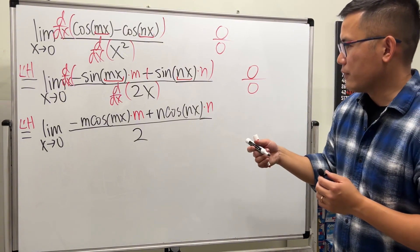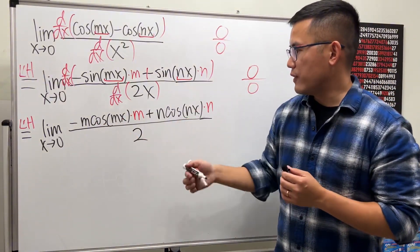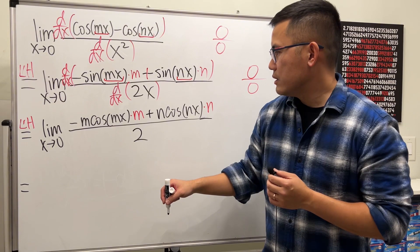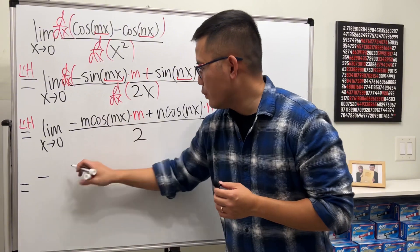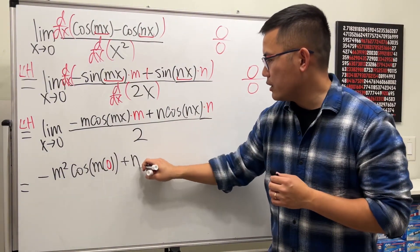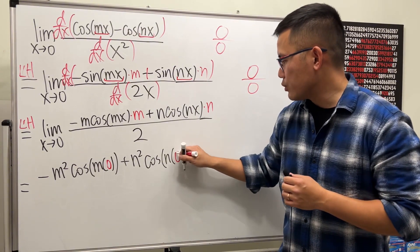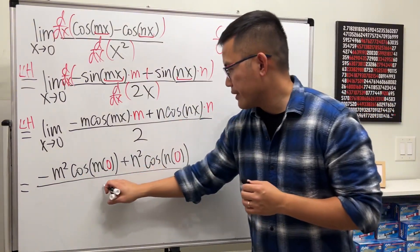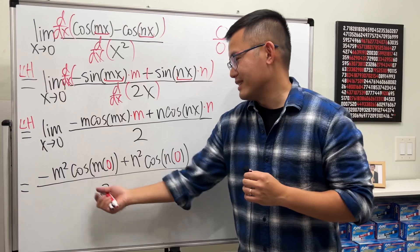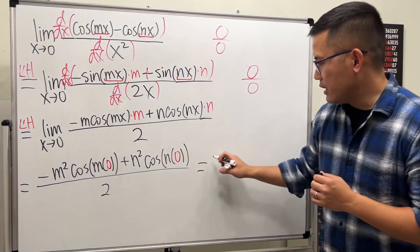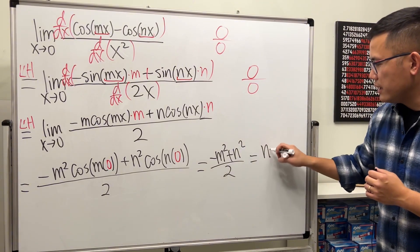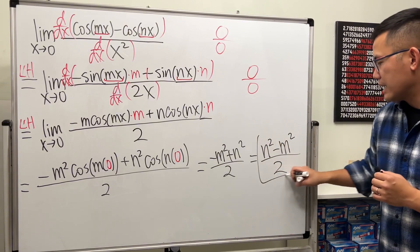When x is zero, cosine of zero is 1, so this is very clean. We get negative m² times cosine(m·0) plus n² times cosine(n·0), all over 2. Since cosine 0 is 1, this simplifies to negative m² plus n², over 2. Writing the positive term first, the final answer is (n² - m²) / 2.